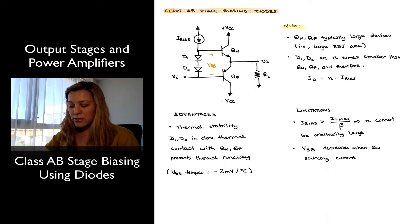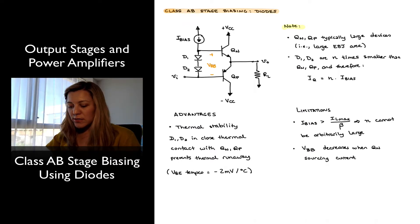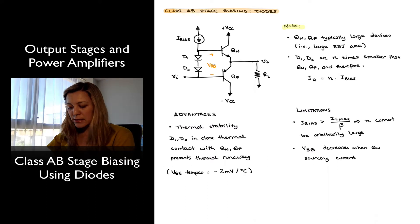And so normally there is a ratio of N between the output transistors and those D1 and D2 diodes, which, especially in an integrated circuit, they're typically implemented as diode-connected transistors, so that the quiescent current IQ of the output transistors is equal to N times the bias current, N being the ratio between the area of the base-emitter junction of the output transistors versus the biasing diode-connected transistors.